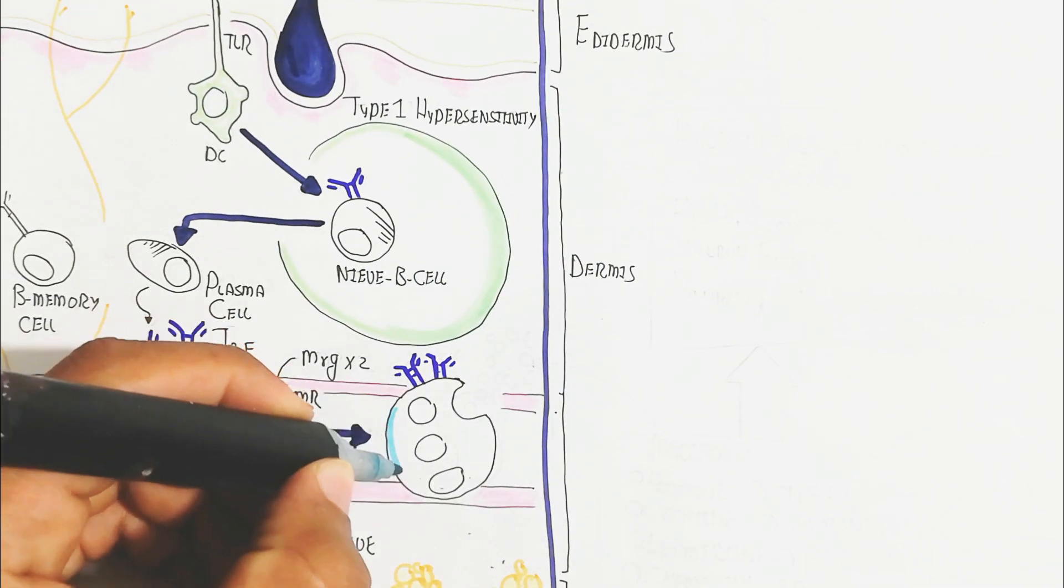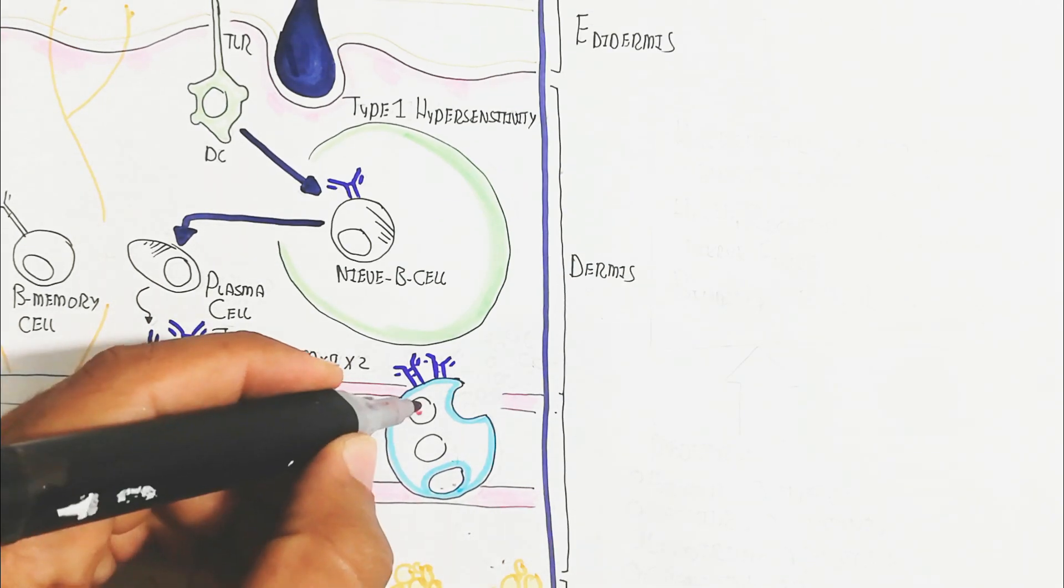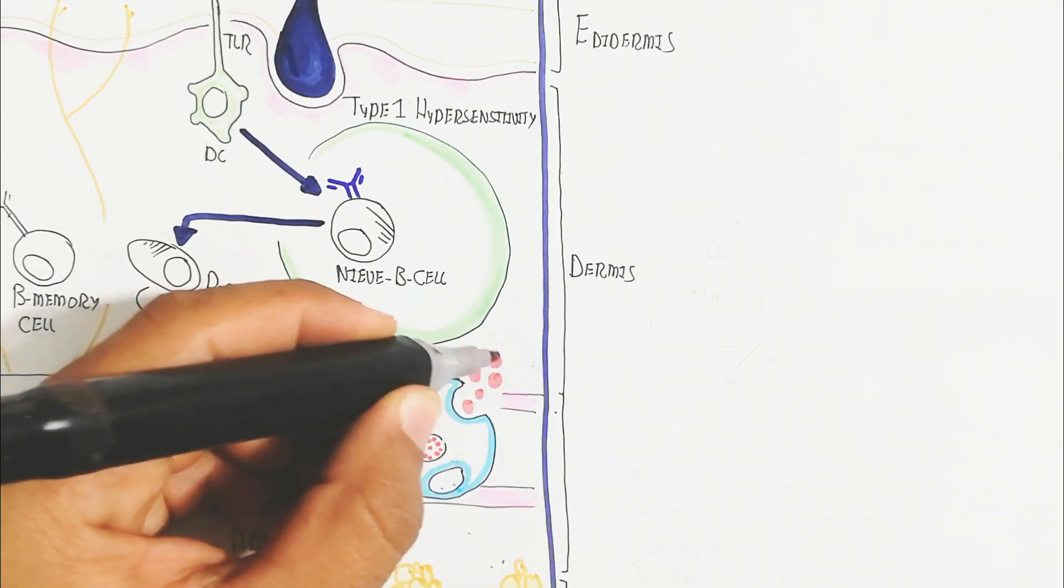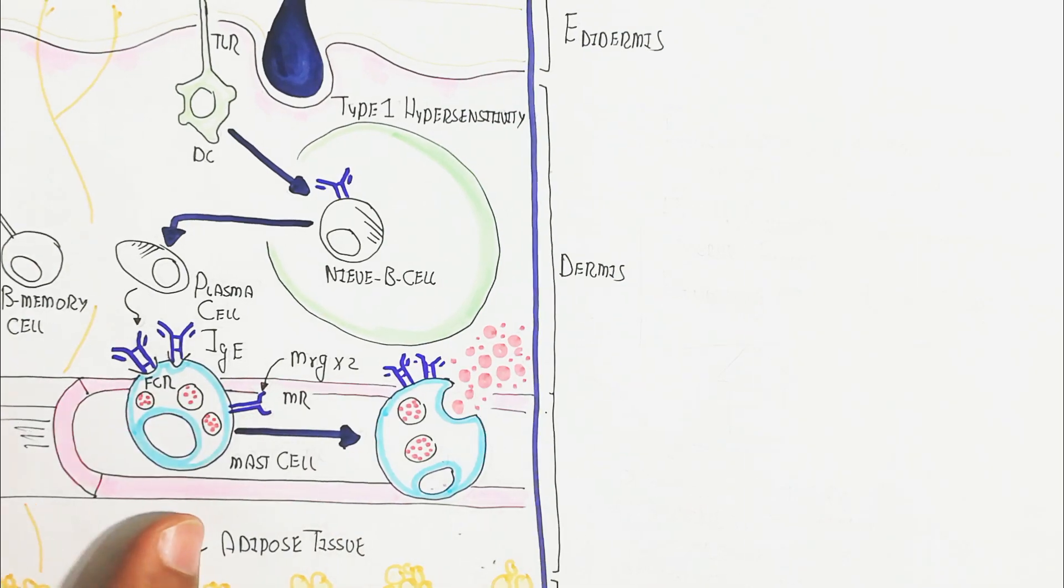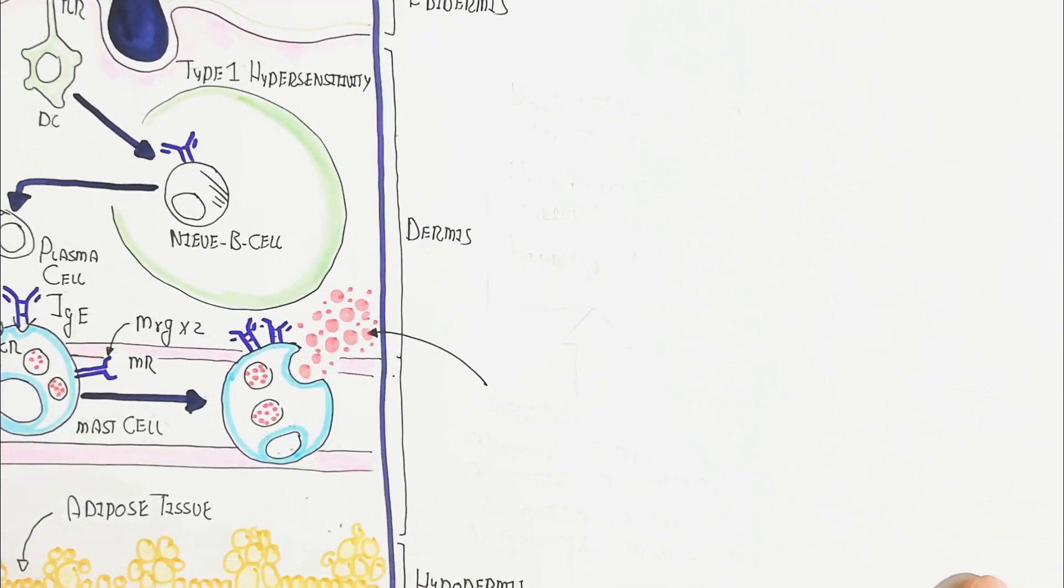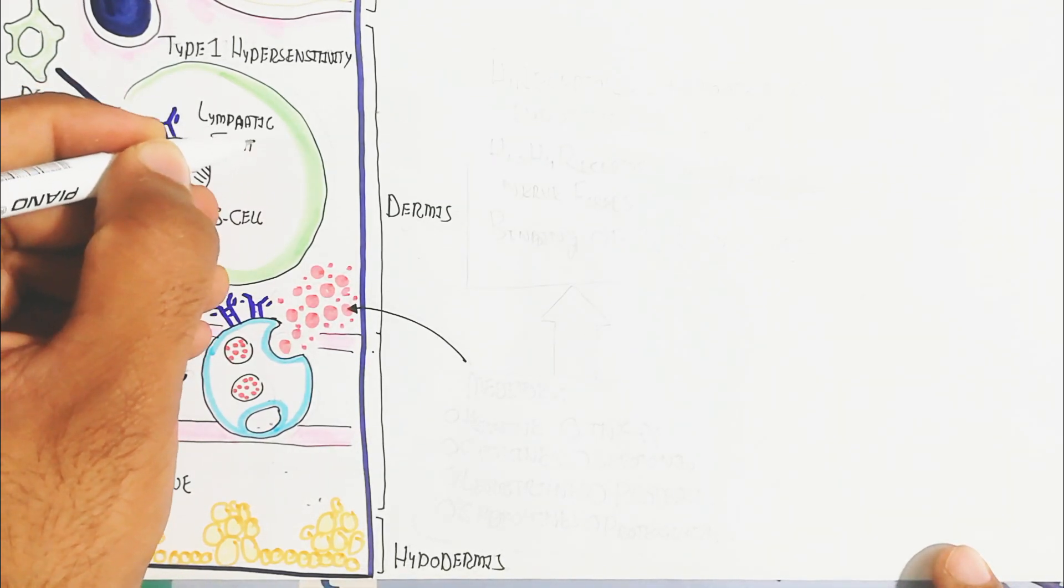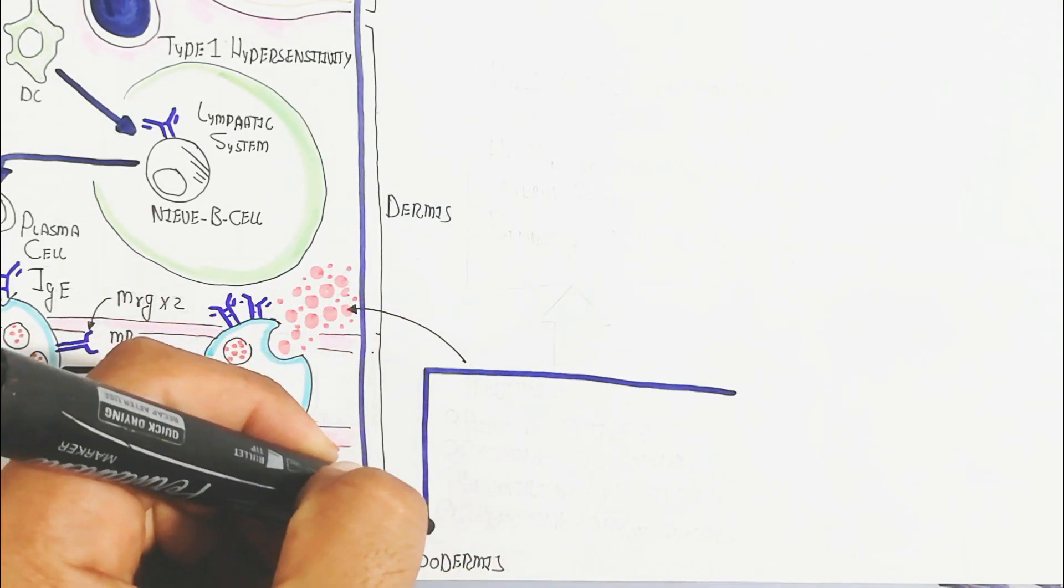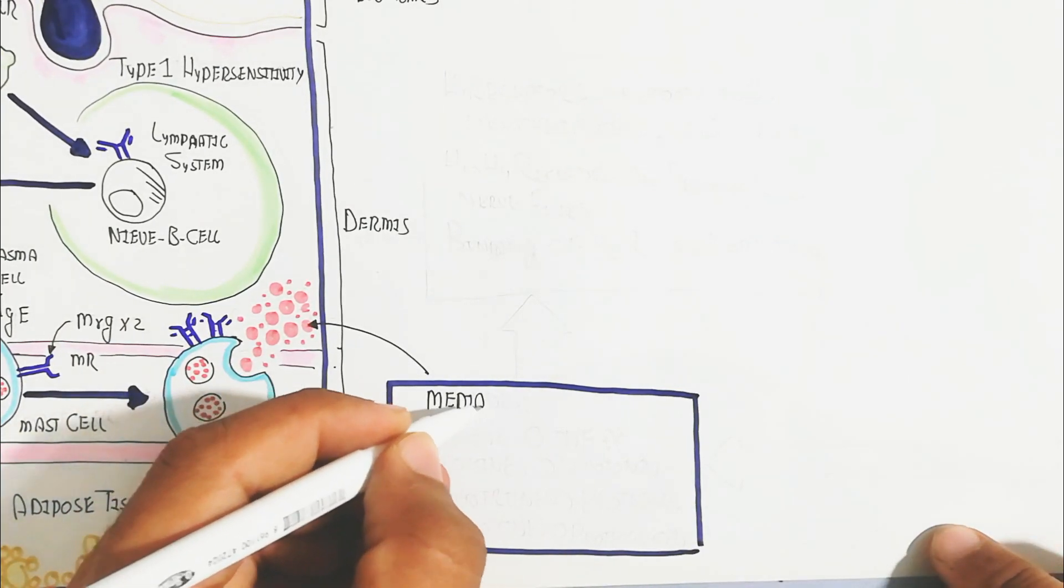After this degranulation through M receptor, MRGX2, the M receptor activation will lead to degranulation of different mediators. These mediators will cause inflammation by binding to different tissue with different receptors, especially the histamine receptor. Let's understand what happens with these mediators. We will discuss different types of mediators like histamine.